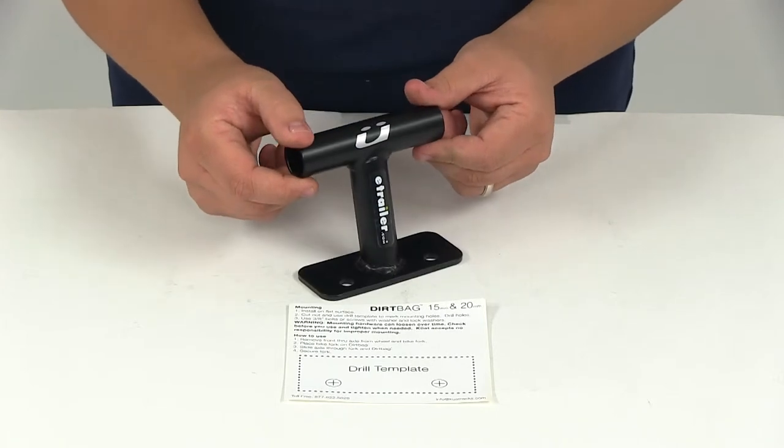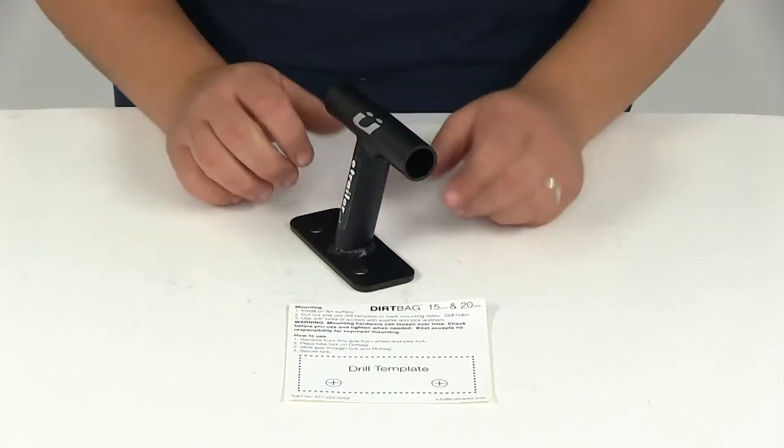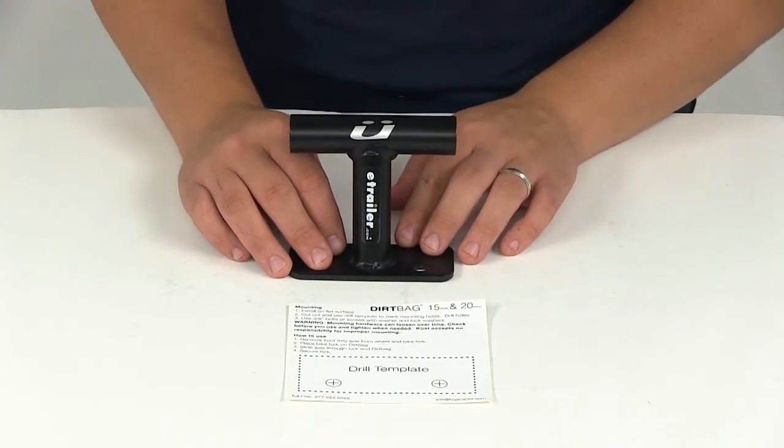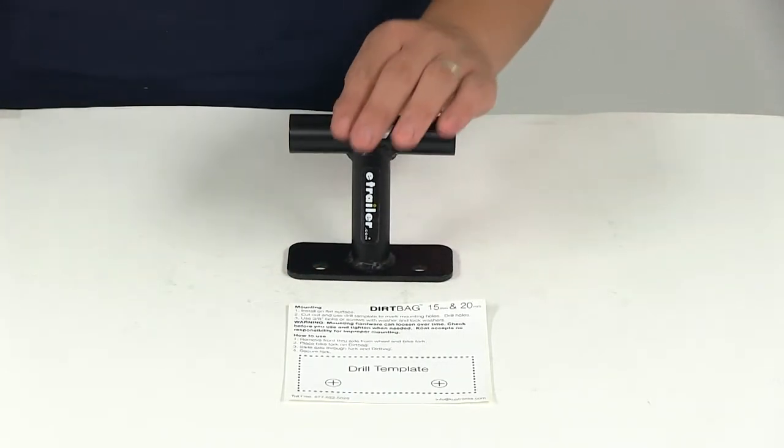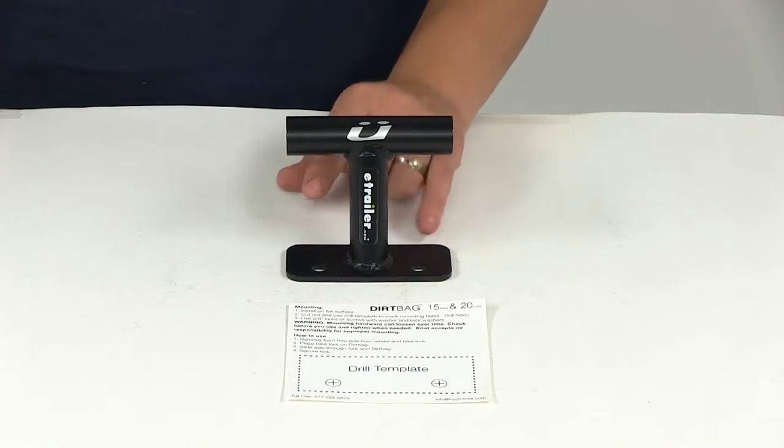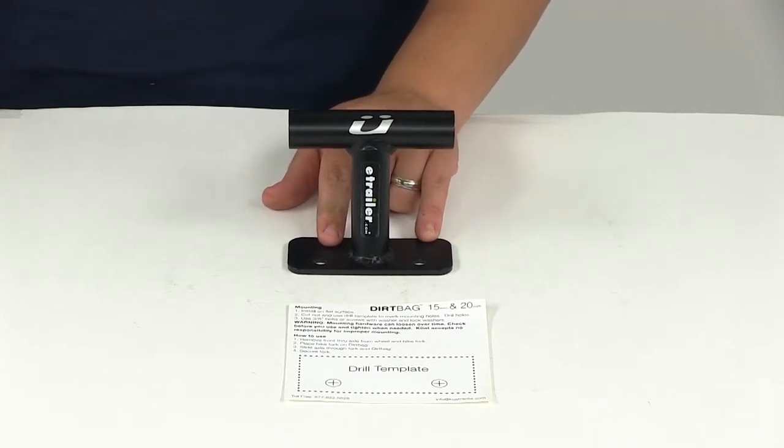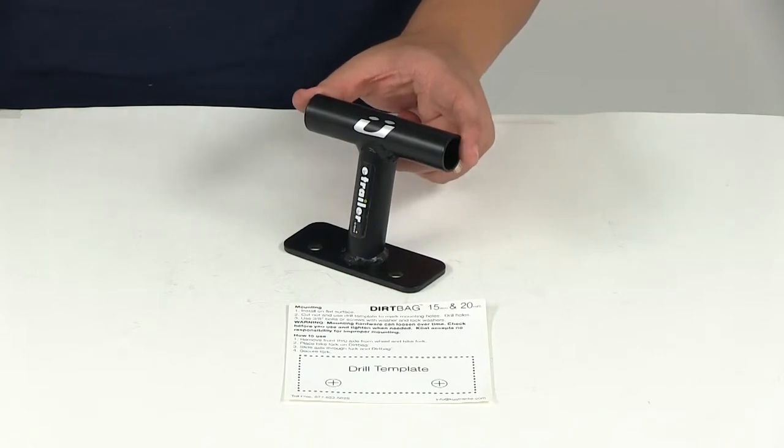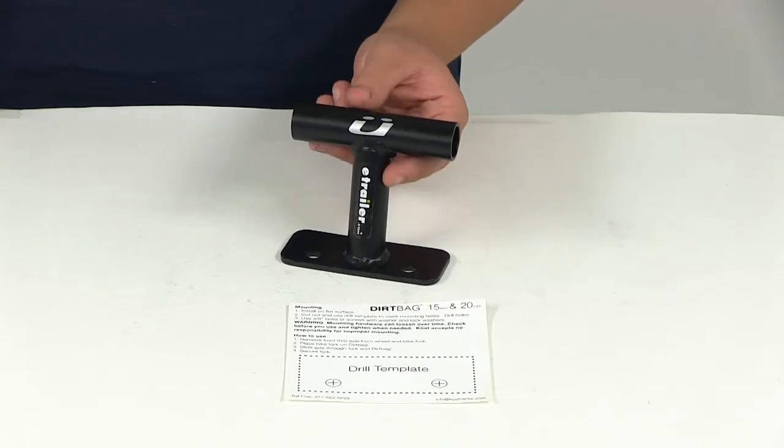It's made from sturdy steel construction with a black powder coat finish, ensuring durability and rust resistance. This is designed to fit most 20mm by 110mm through axle forks. No additional accessories are needed to mount your bicycle; it's designed to use your 20mm through axle skewer.